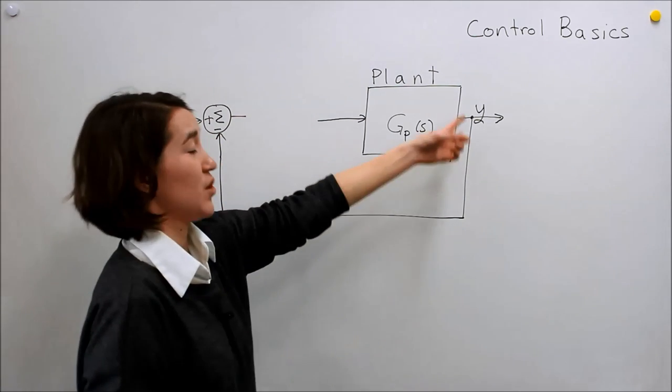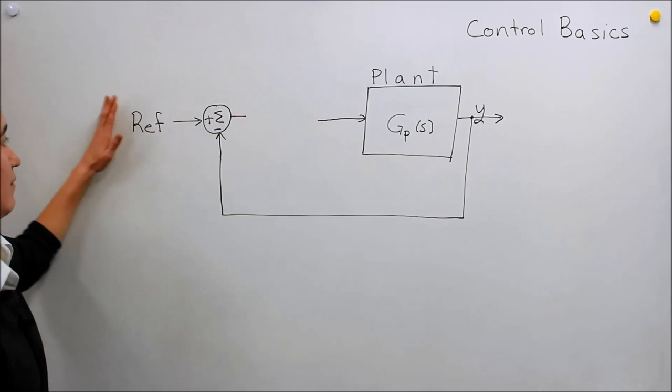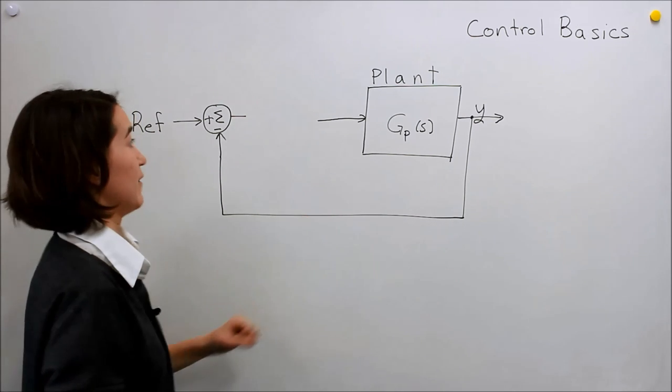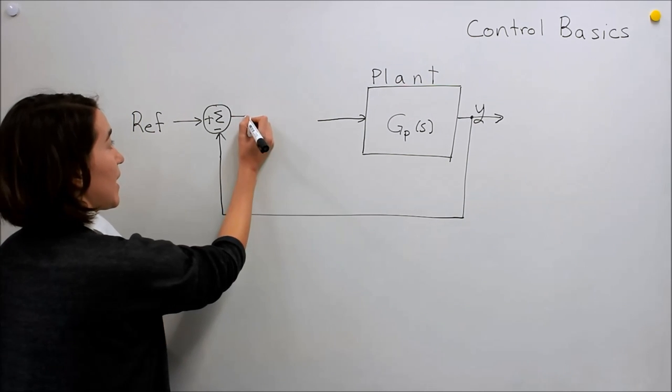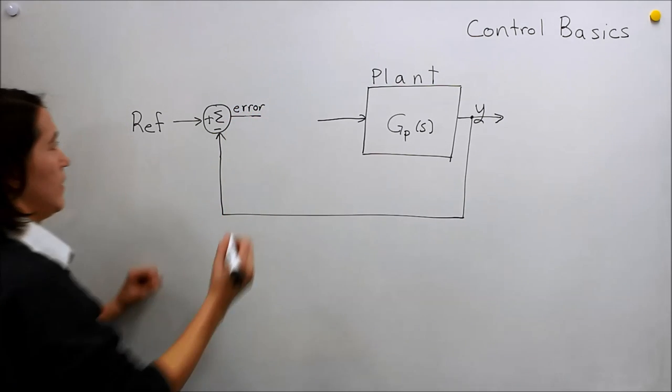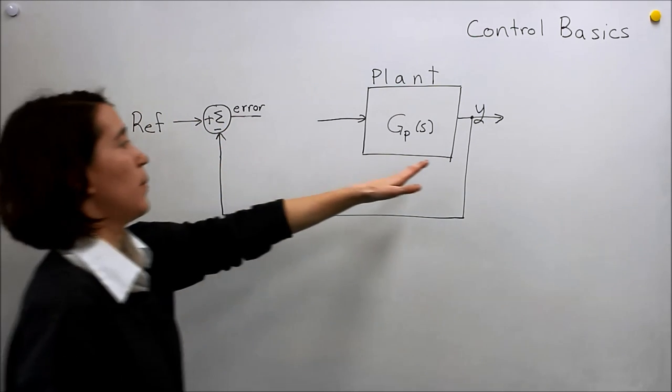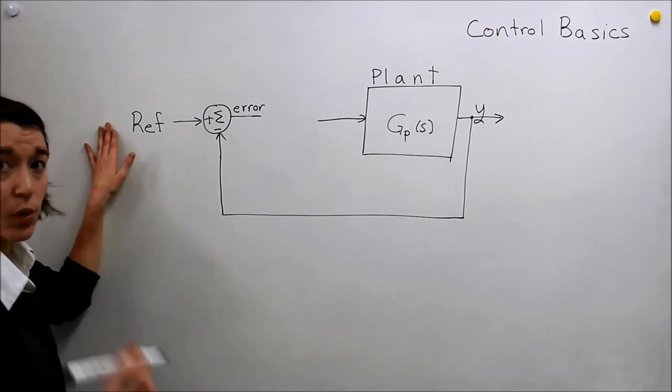If our Vout is too high, then we'll have a negative value coming out here, right? Because the reference minus the larger value will be negative. So what we do is we take that difference, and we call this the error. And this is just subtraction, so we're at the error of the output relative to the reference, wherever we want it to go.